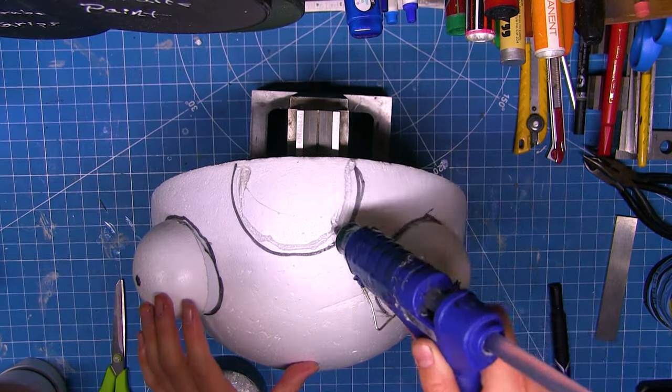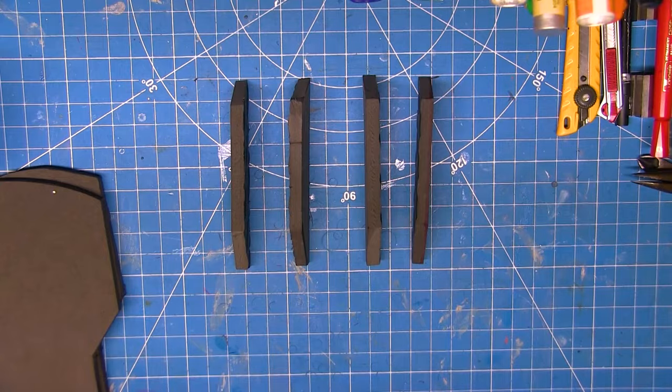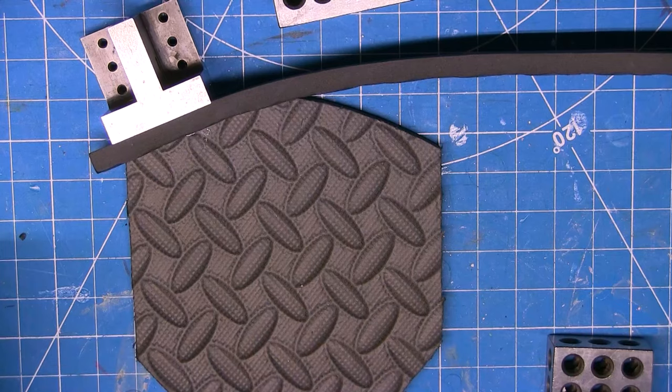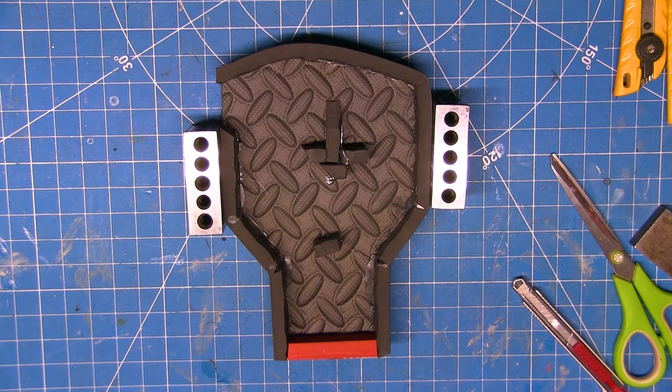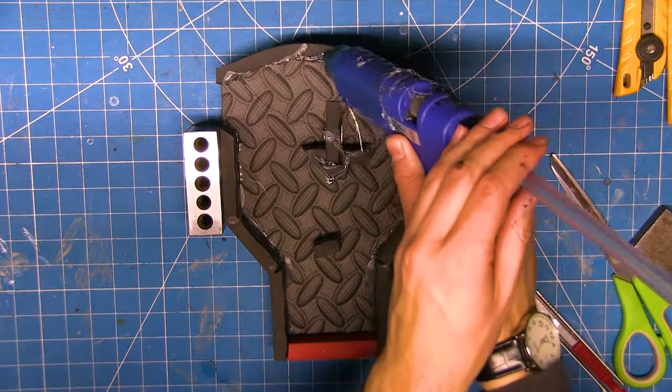Before gluing the two dome halves together, I have to first make the innards. Now, because they're mostly hidden, they don't need to be exact. They don't need to be as intricate as the Mr. Handy robots that are flying around without the casing. But there does need to be something there to hold up the eye stalks, which means I might as well make it close. You know, just make an attempt to get close.